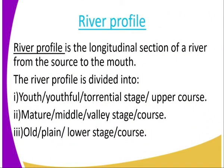Now we look at the river profile. The river profile is the longitudinal section of a river from the source to the mouth. It is divided into three stages: the youth stage, also referred to as the youthful, torrential, or upper course stage; number two, the mature or middle valley stage; and number three, the old age or lower course stage.